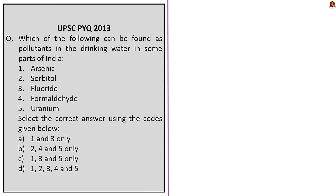The second question lists certain pollutants and asks how many of them are found in drinking water in some parts of India. The correct answer is option C: 1, 3 and 5 only. India's drinking water faces problems of fluoride, uranium, arsenic, mercury, cadmium, chromium, and heavy metals. Sorbitol is an artificial sweetener and formaldehyde is used in coatings — they are not considered drinking water pollutants in India.